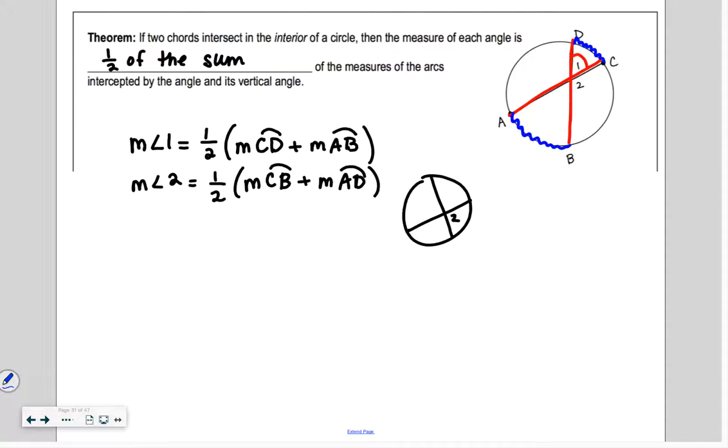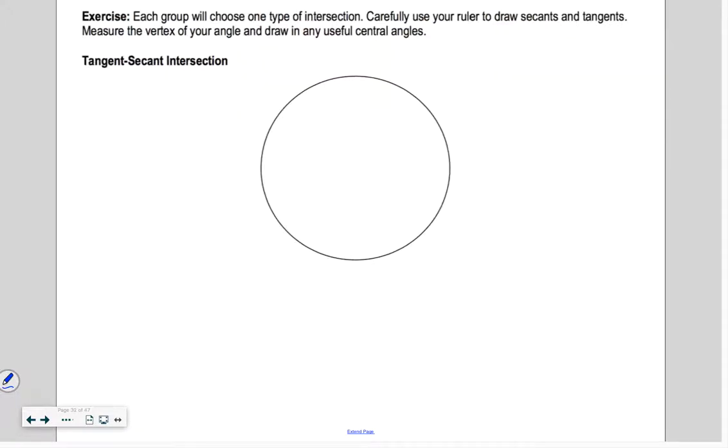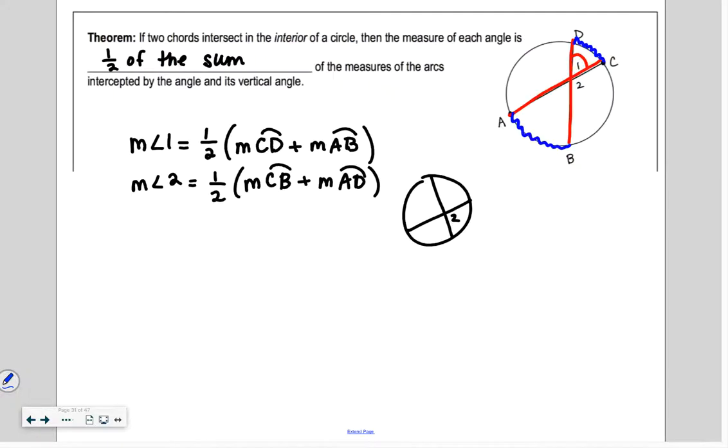Yeah. I was going to have us play around on Desmos, but I was having trouble making Desmos. So each group will choose one type of intersection. So carefully use your ruler to draw secants and tangents. So this is kind of hard to do. Well, let's try to sketch them out together. Did I skip something? I feel like I skipped something. No. We're good? Okay.